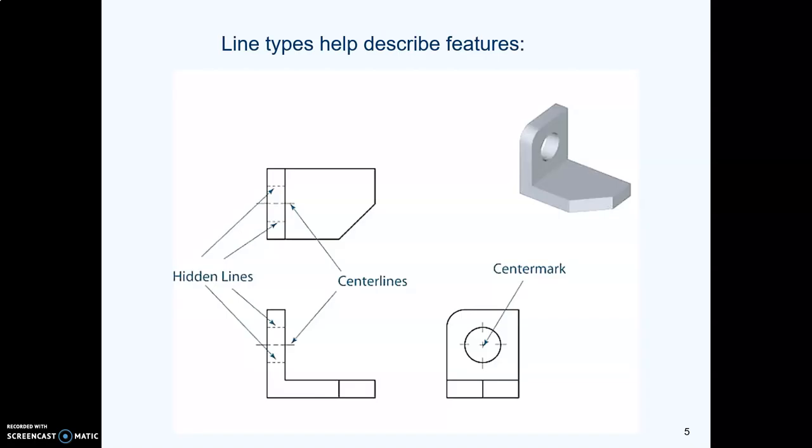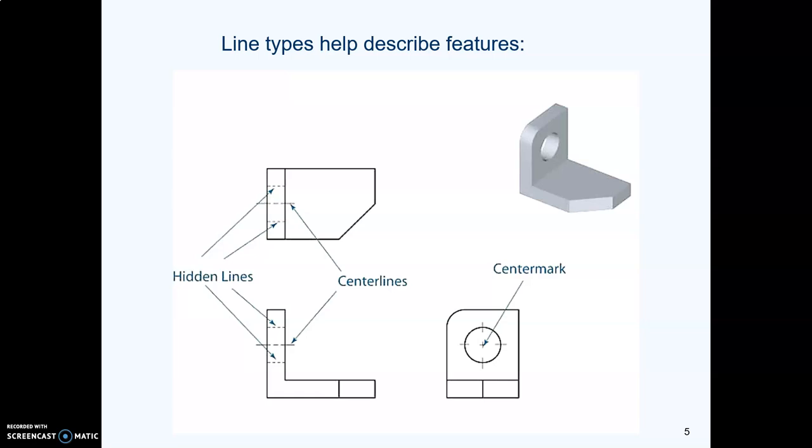Now about lines, and you're probably familiar by now with the alphabet of lines. In mechanical drawings there are only two line weights, thin and thick. That's it. That's all you have to worry about.